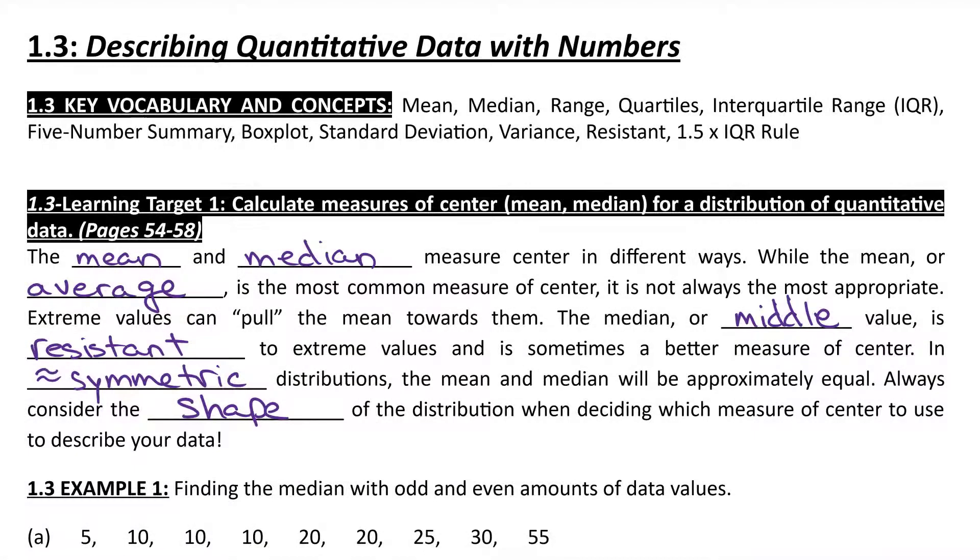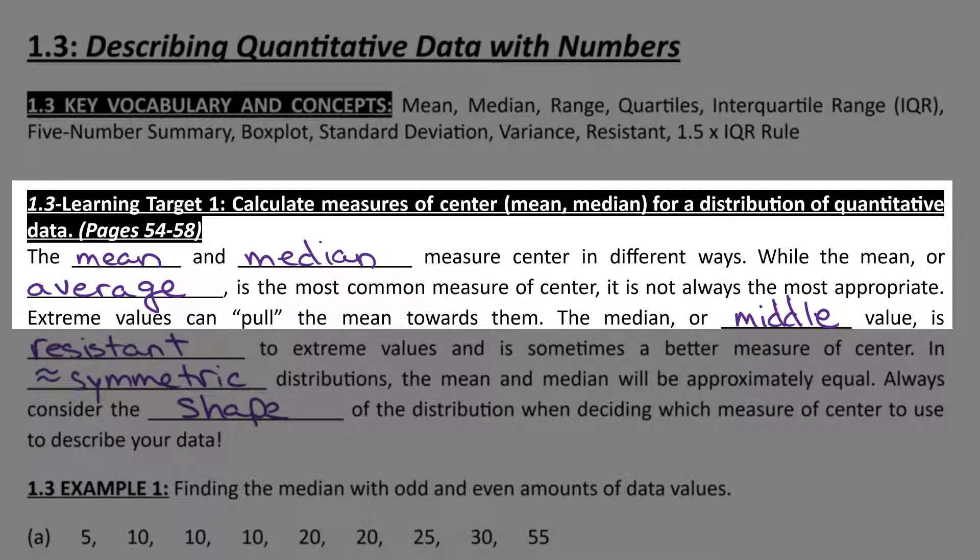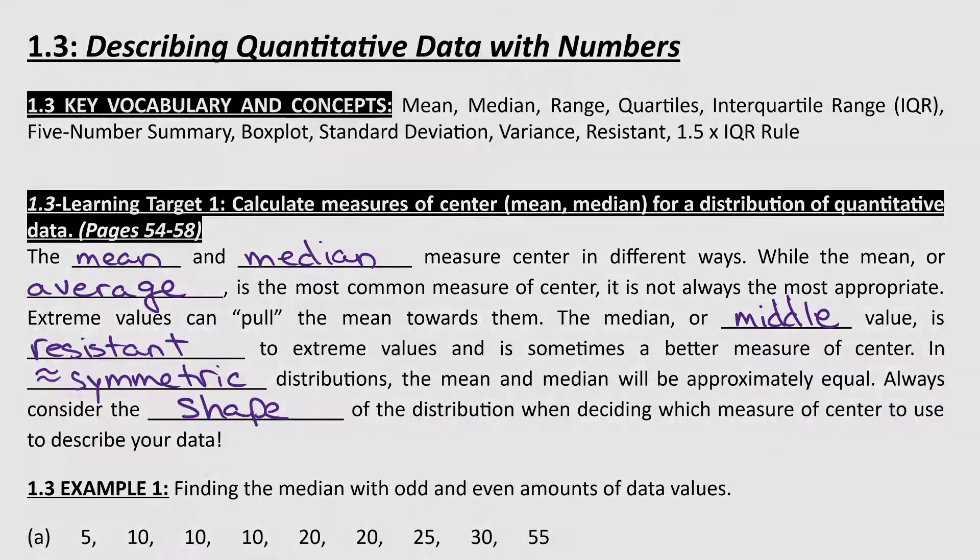So we're in our last section of chapter 1, section 1.3, describing quantitative data with numbers. We're going to focus today on the mean and the median. The mean is your average, the median is the middle. I know you've seen these before, so why don't you give example 1 a try, and then we'll check.